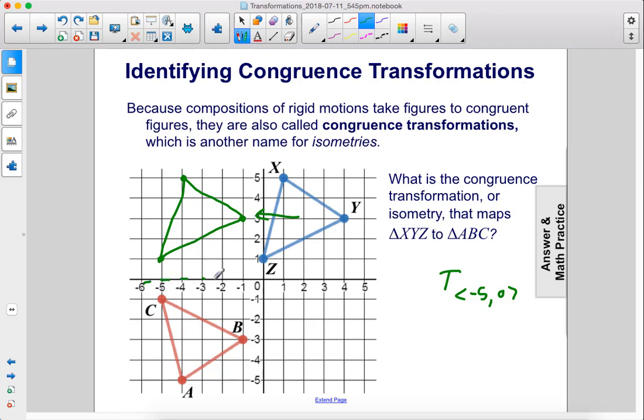Then we reflect it over the line Y equals 0. So this mapped this triangle to this one. Once you reflect it, we have these corresponding points and it reflects over like that.